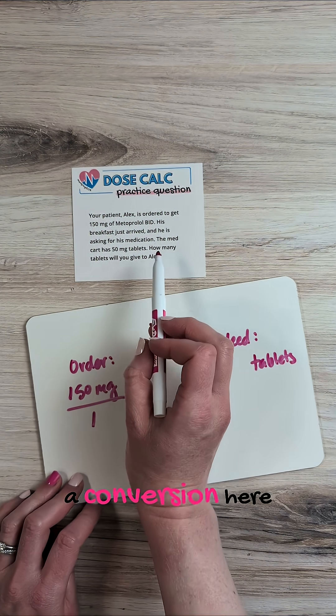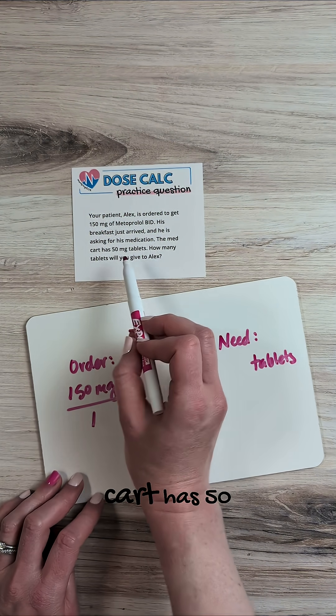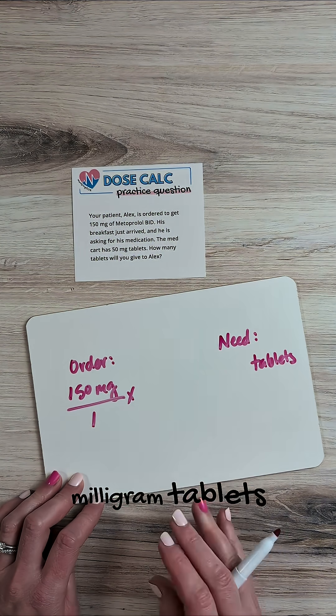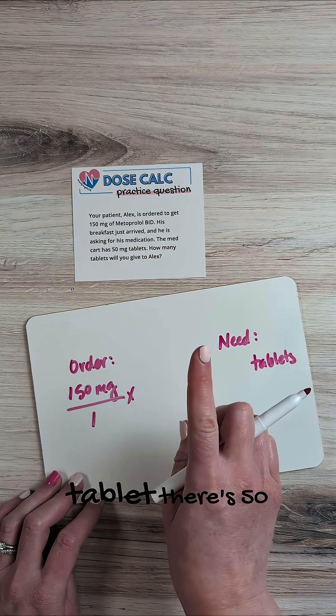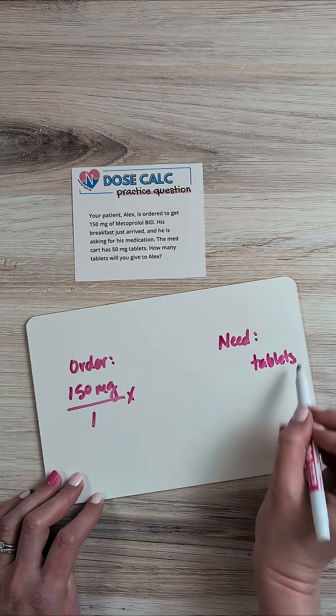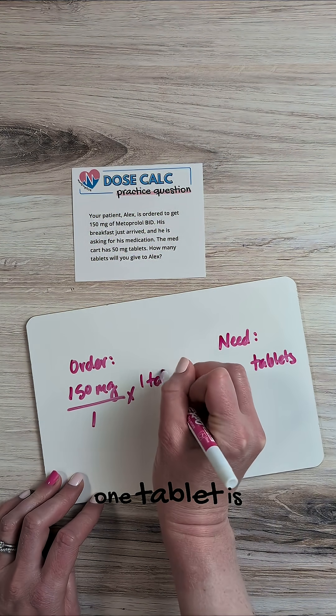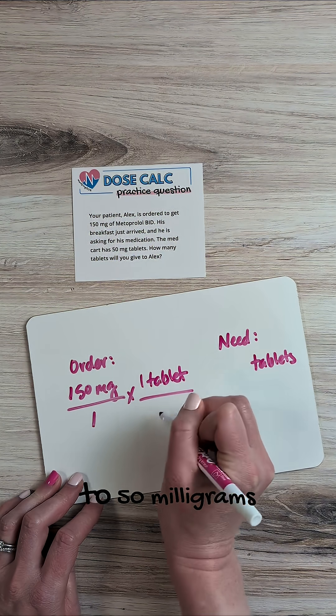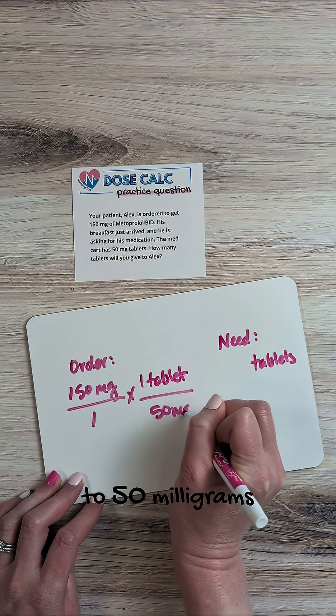So it gives us a conversion here. It says the med cart has 50 milligram tablets. So in every single tablet, there's 50 milligrams in it. So we're going to say one tablet is equal to 50 milligrams.